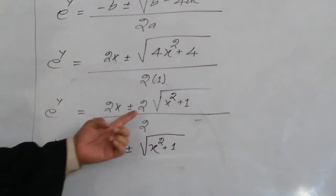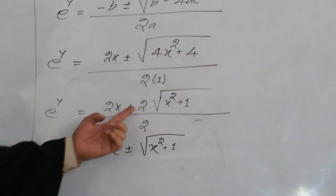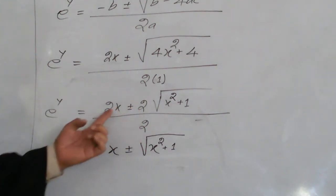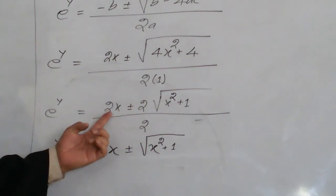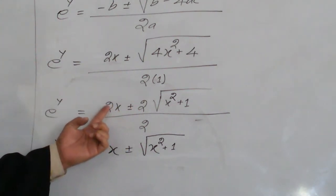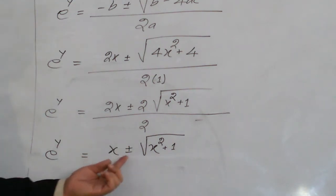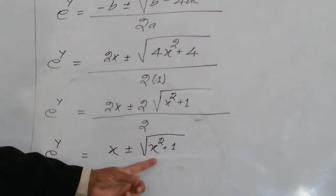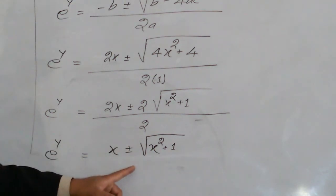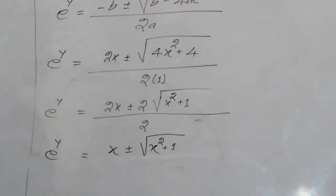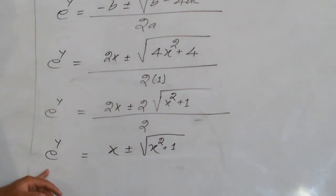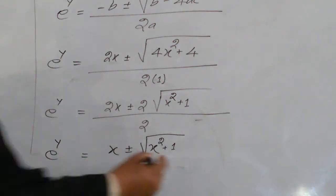After simplification, 2 is common in both terms in the numerator and cancels with the denominator, giving us e raised to the power y equals x plus or minus the square root of x squared plus 1.